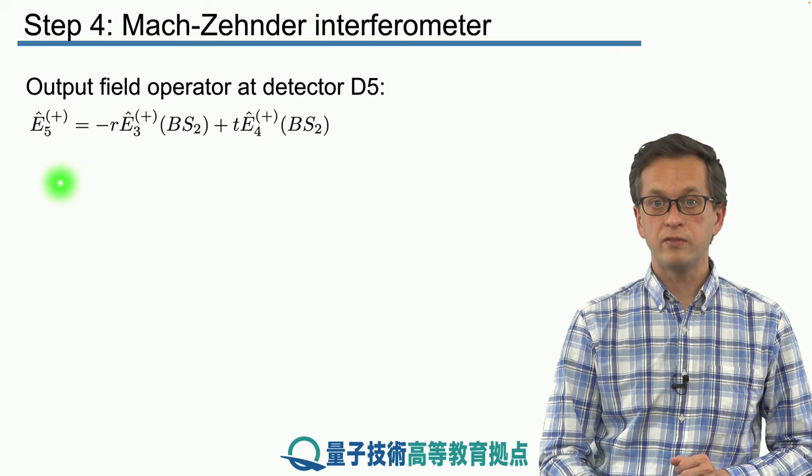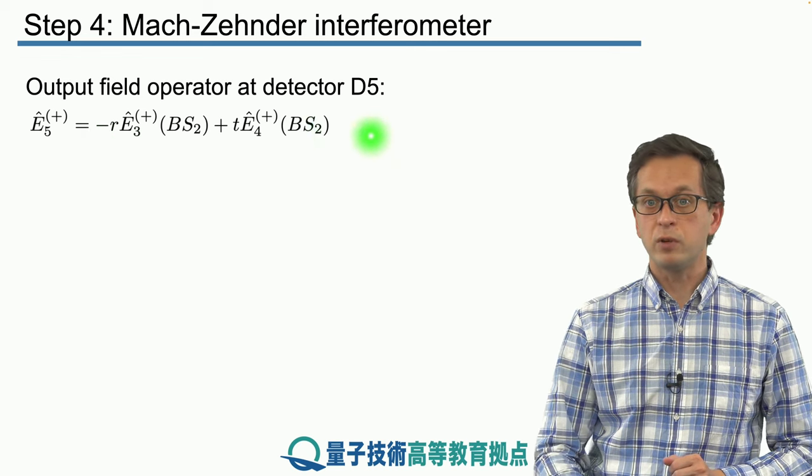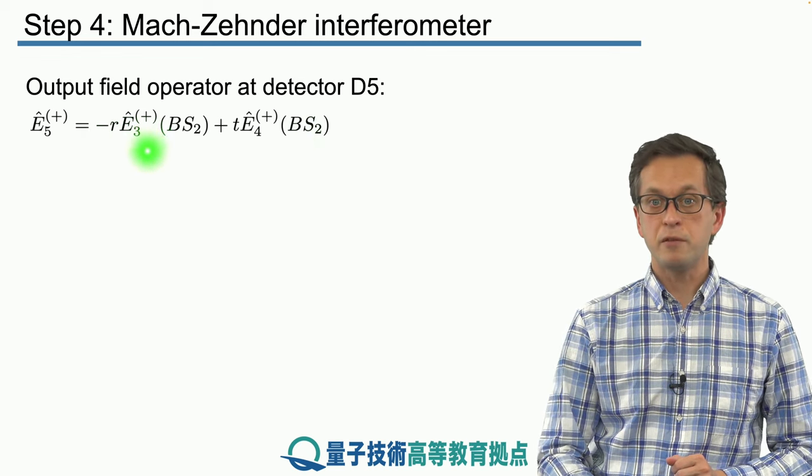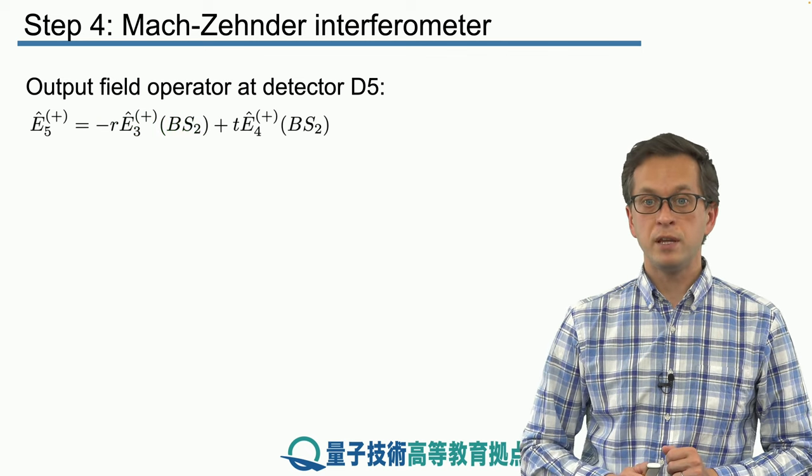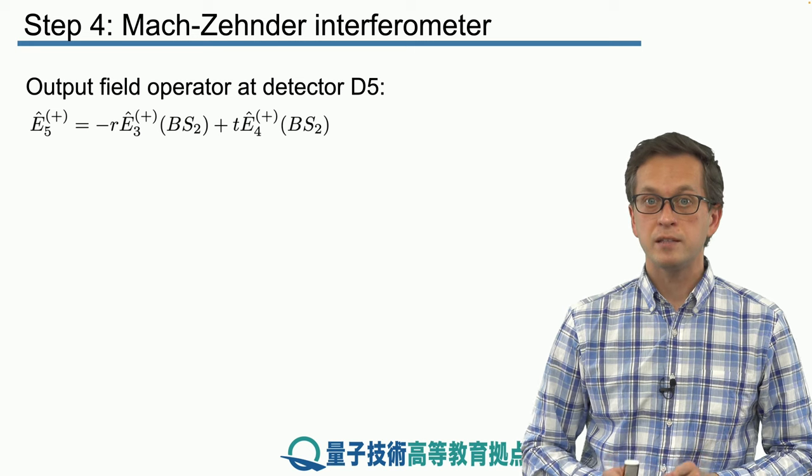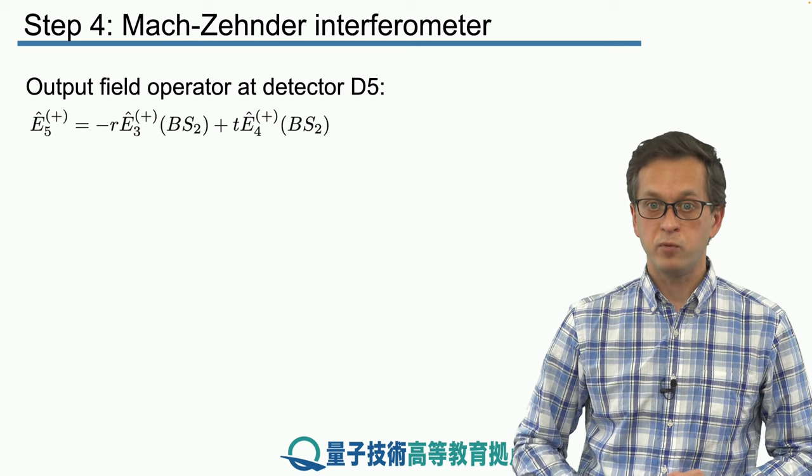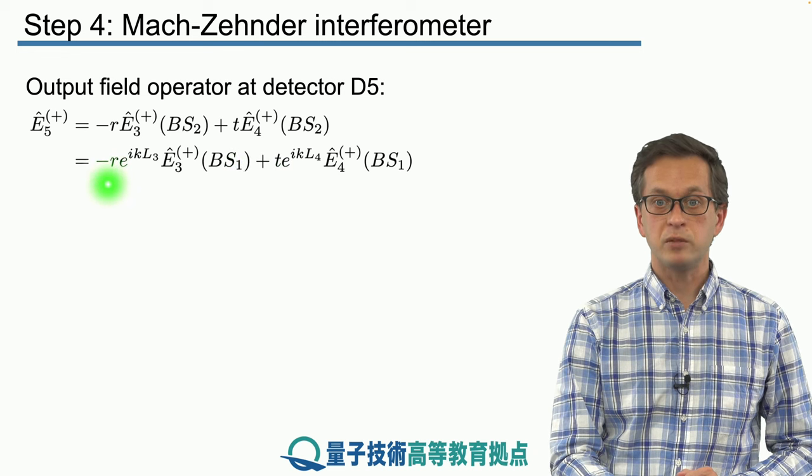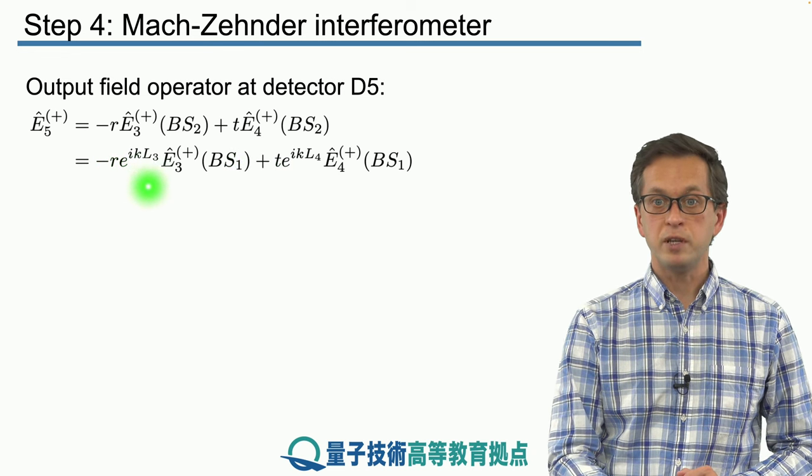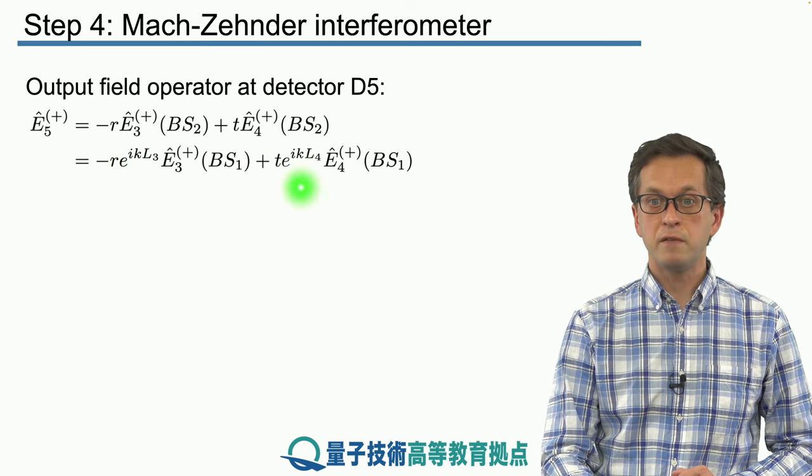The output field in mode 5 is given by the following relationship where these E3s are at beam splitter 2. We know what E3 at beam splitter 2 is in terms of E3 at beam splitter 1. So we substitute and we pick up these exponential terms in front of E3BS1 and in front of E4BS1.